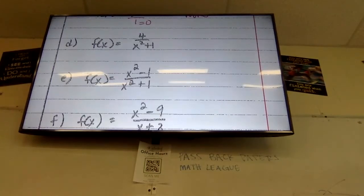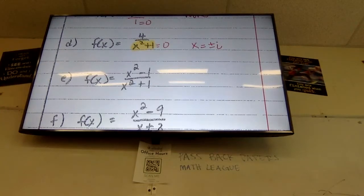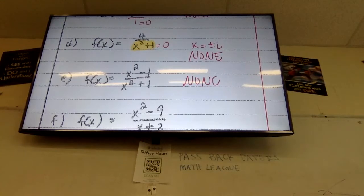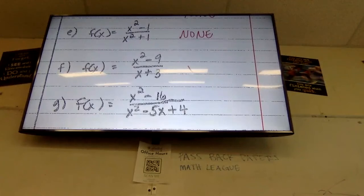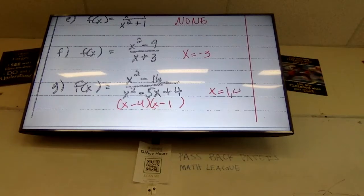What about letter D? x squared plus 1 — it's kind of a trick question. If we set that equal to zero, that gives us x equals positive or negative i. I can't graph an imaginary number, so anytime you have x squared plus something in the denominator, there's no number you can plug in to make your denominator equal zero — so there's none here as well. Letter F is negative 3. And for G you have to factor — x minus 4 times x minus 1 — so my asymptotes are at 1 and 4.